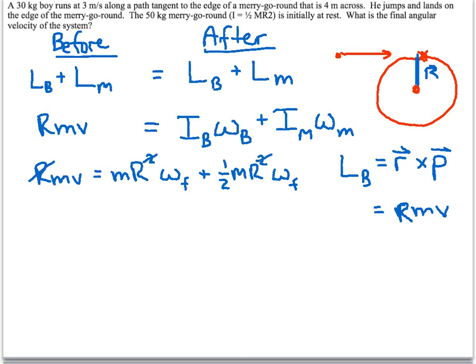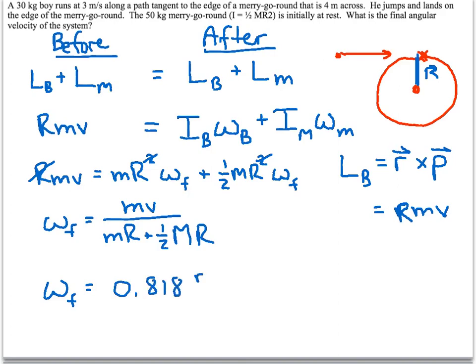And if we rearrange this and solve for omega final, we end up with mv over mr plus 1/2 the mass of the merry-go-round r. And if you plug everything in, you get omega final is 0.818 radians per second.